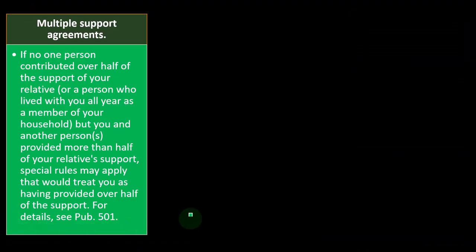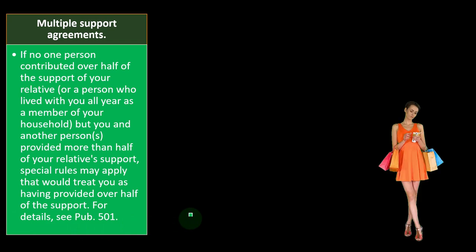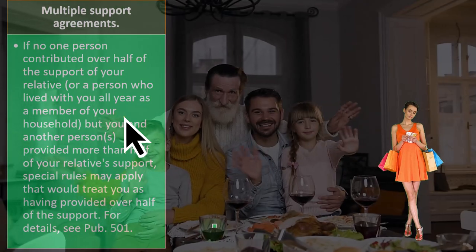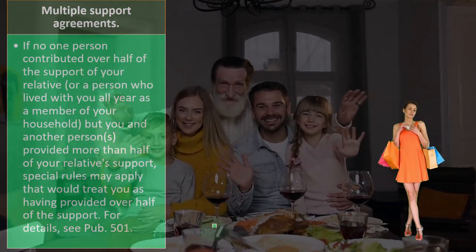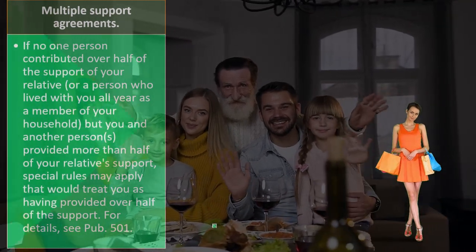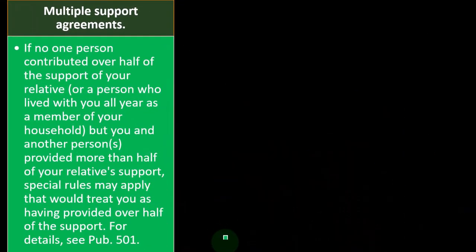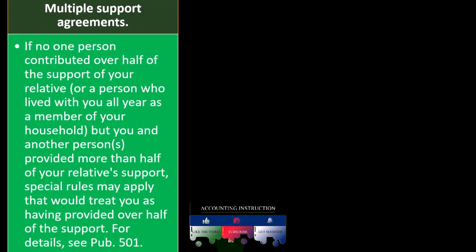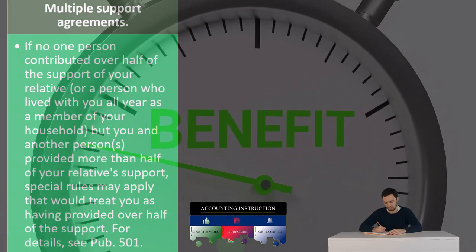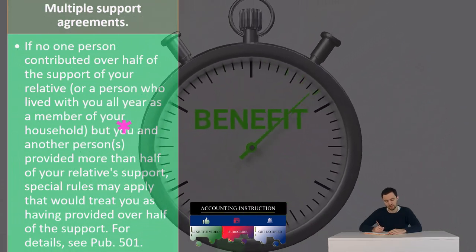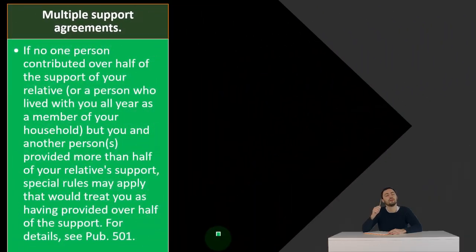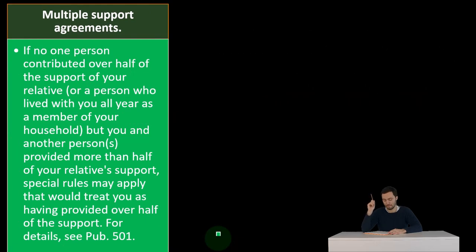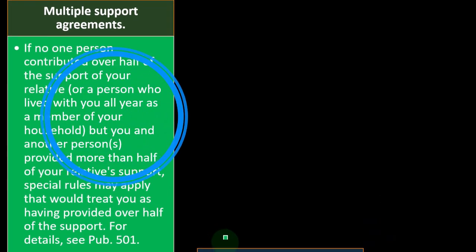Multiple support agreements: if no one person contributed over half the support of your relative, you can imagine this happening if, for example, three or four people were supporting a dependent — no one person puts in over half the support. Now you have a situation where no one meets that test, but someone should get a benefit for the dependent. Special rules may apply that would treat you as having provided over half the support. See Publication 501 for details.